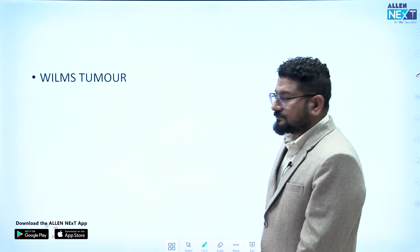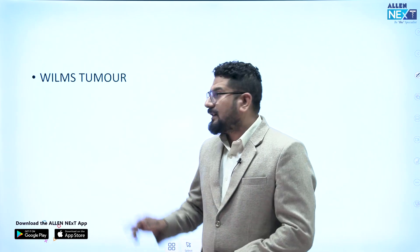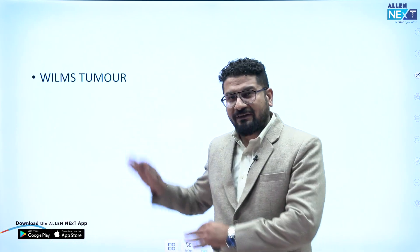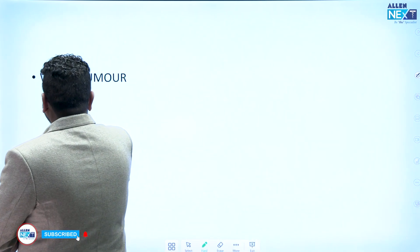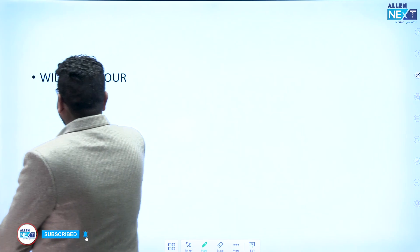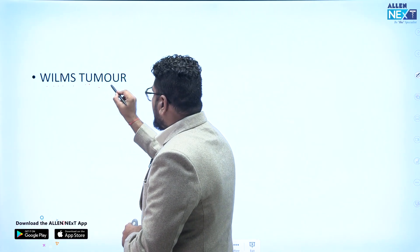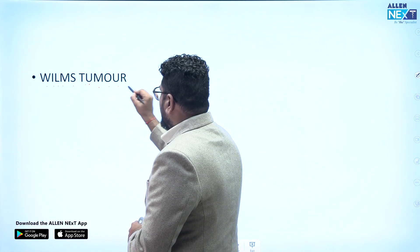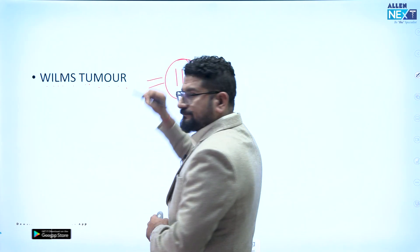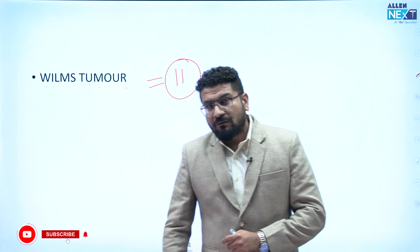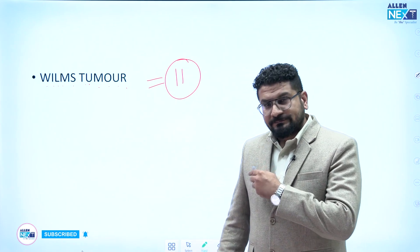Moving to Wilms tumor. Counting the letters in 'tumor' — 1, 2, 3, 4, 5, 6, 7, 8, 9, 10, 11 — chromosome number for Wilms tumor is 11. Wilms tumor is also called nephroblastoma.